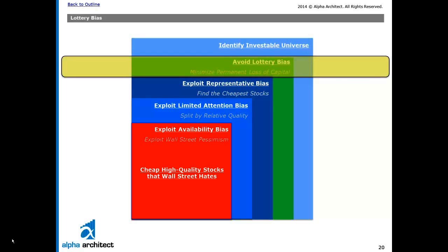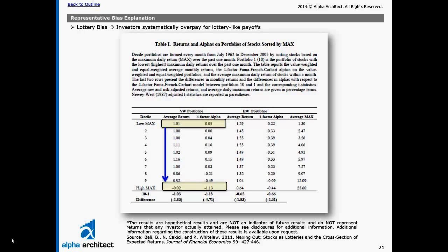So step one, let's first look at lottery bias. Here's a table from the Maxing Out paper, which shows very clearly what happens to stocks that exhibit lottery-like behavior. The authors sort stocks each month based on the highest daily return of stocks for that prior month. Those stocks with large one-day returns are considered more akin to lotteries, whereas those that don't have this sort of price action are considered less like lotteries. The authors identify these lottery characteristics, sort the portfolios based on this, and find that investors on average overvalue the lottery-type stocks, represented by the high-max portfolios and the associated alpha, which controls for firm-specific characteristics.